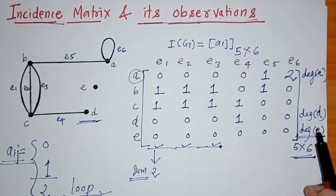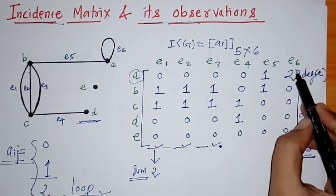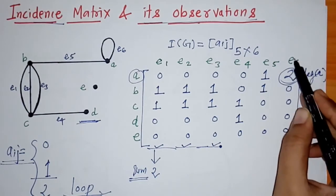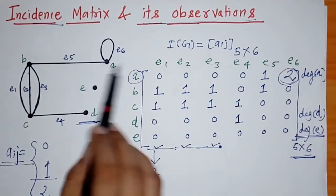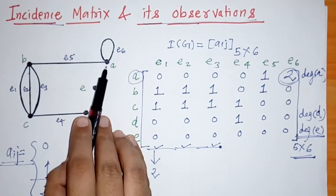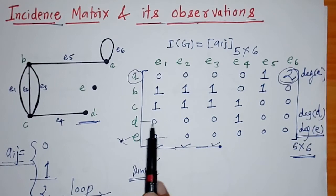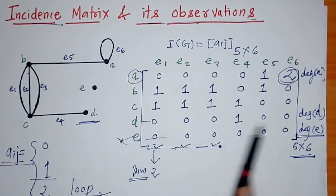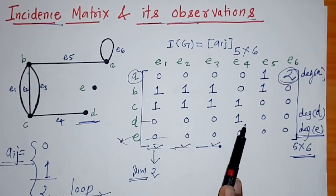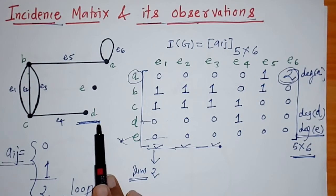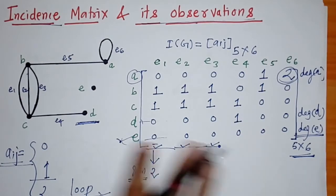For column E6, there is a single entry of 2. This represents that E6 is a loop. Also, all entries in the row of vertex E are 0s, which represents an isolated vertex. In the row for vertex D, there is only a single 1, which represents that D is a pendant vertex.